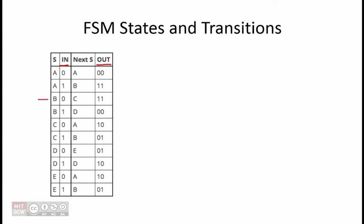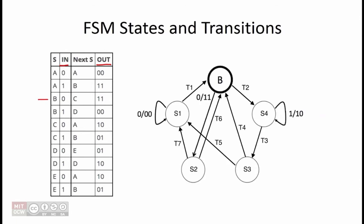We are given a partially filled state transition diagram shown here. Our job is to fill in the missing state and transition labels. In other words, S1 through S4 should be replaced with the states A through E, and T1 through T7 should be replaced with an in slash out transition corresponding to that arrow.